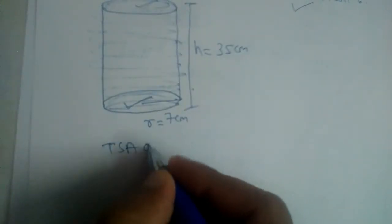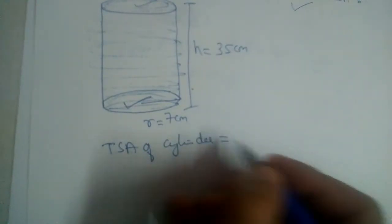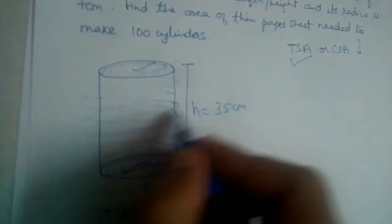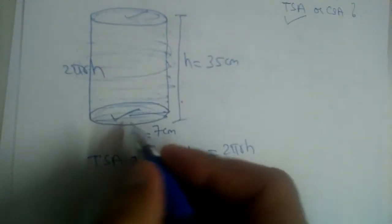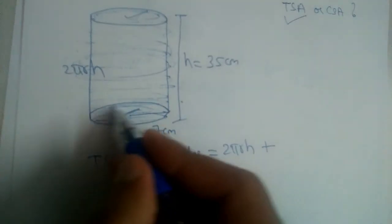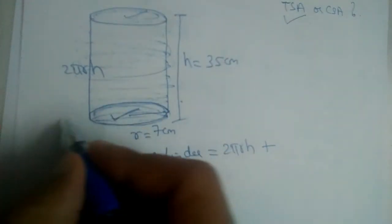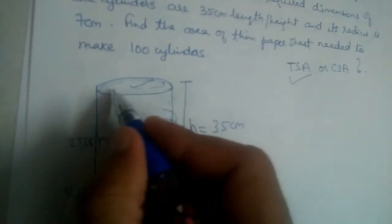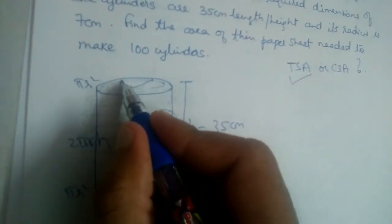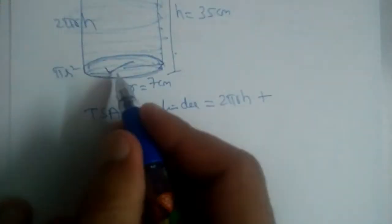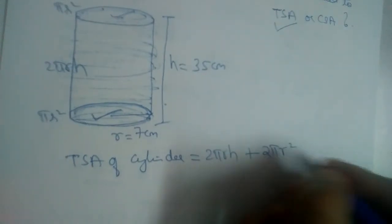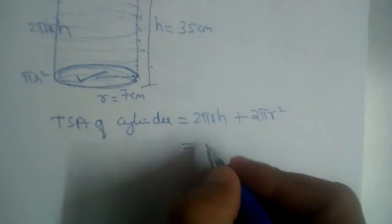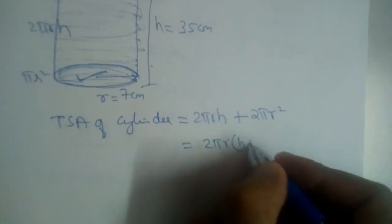Total surface area of a cylinder equals curved surface area plus area of one circle. The curved surface area is 2πrh. So total surface area = 2πrh + area of base πr² + area of top πr², which gives 2πrh + 2πr². Taking 2πr common, we get 2πr(h + r).